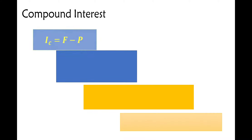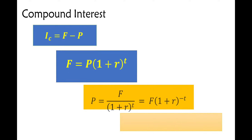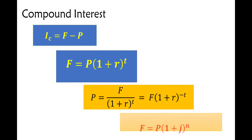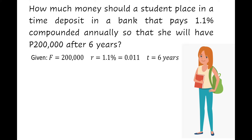For compound interest, we can use these formulas: if compound interest is unknown, if future value is unknown, if present value is unknown, and if compounding more than once a year. For example: how much money should a student place in a time deposit that pays 1.1 percent compounded annually so that she will have 200,000 after six years? Given: future value = 200,000, rate = 1.1% or 0.011, and t = 6 years.